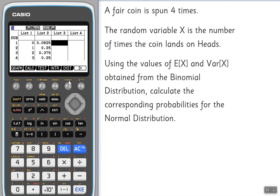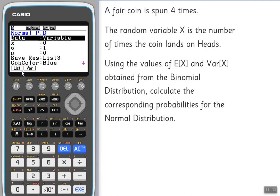To do that I go into distribution again. This time I go to F1 for normal. And I'm going to do npd, I'm going to do individual probabilities, so press F1 again. Now my data again is in a list so I need to choose F1 and the data is in list one.